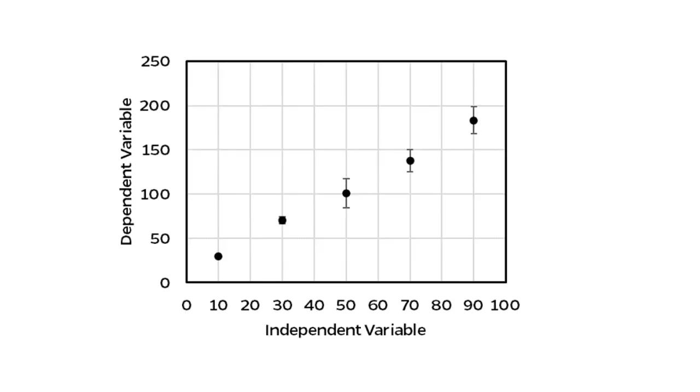So, say that you perform a series of experiments and plot your data in a scatter plot, and it ends up looking like this. It kind of looks linear, but because there is some experimental scatter, it's not perfect.